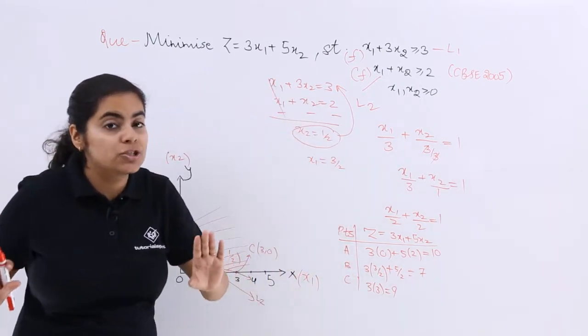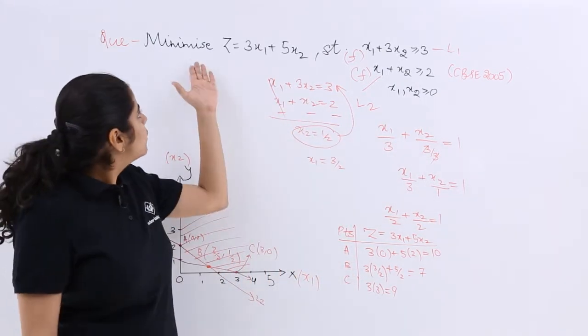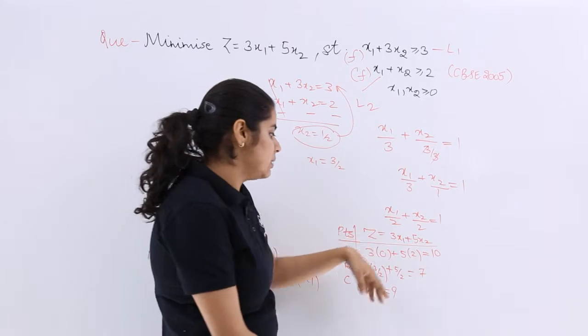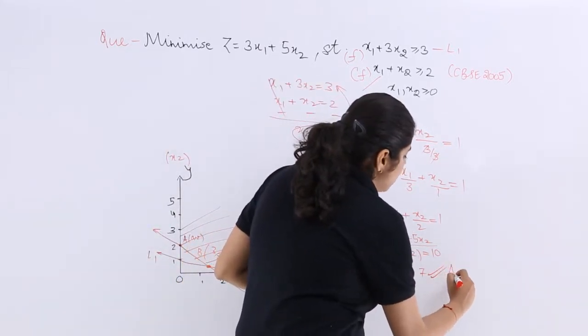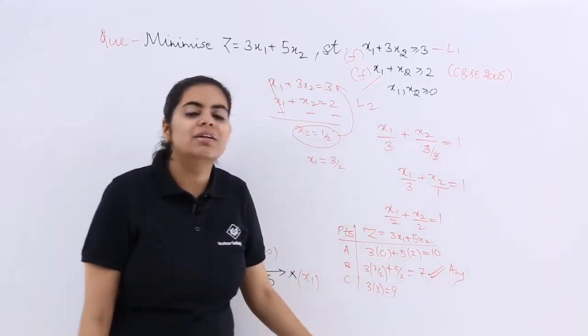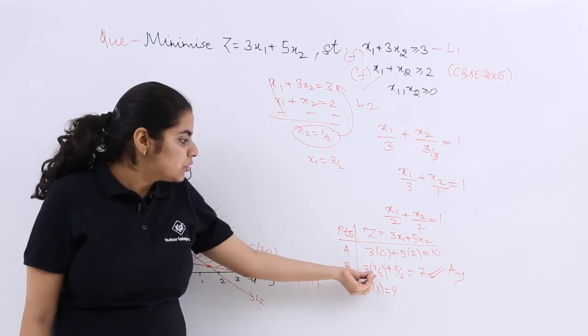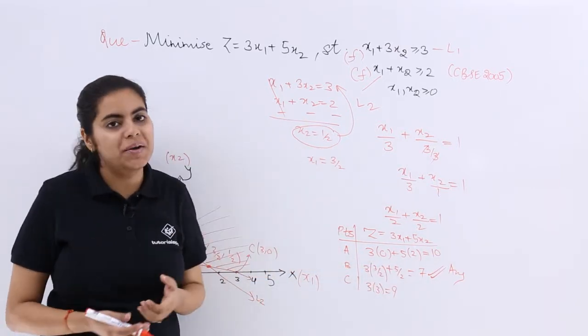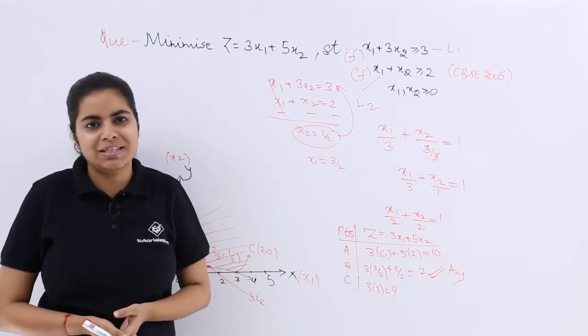Now, what was the question? Was it maximum or minimum? The question said minimize. So what is the minimum value? It is 7. So your answer is the required value is 7 at three-halves, one-half. And that is how you do this kind of a question.